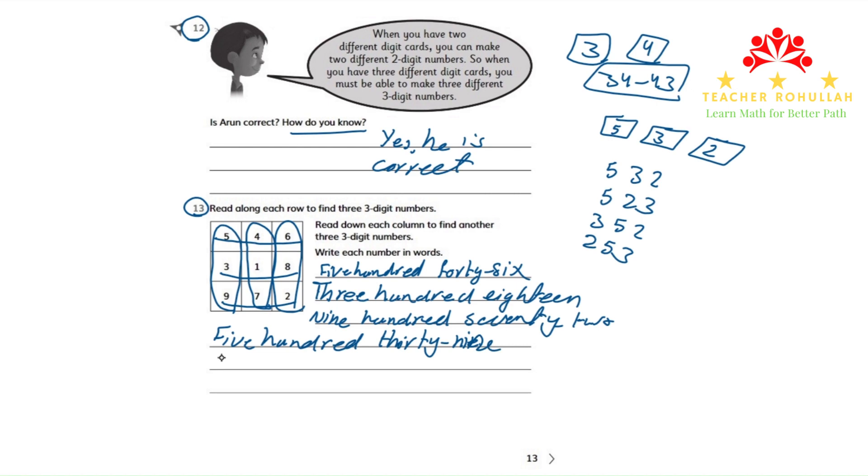In the second column, we have 417: four hundred seventeen.